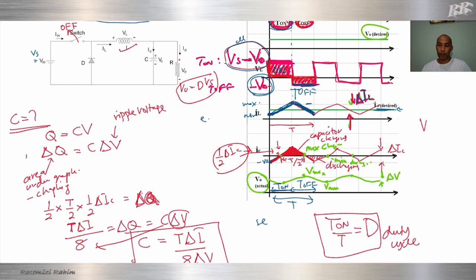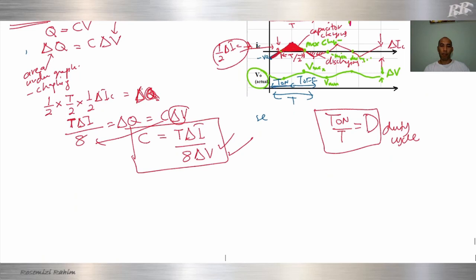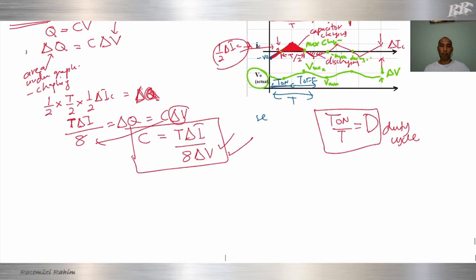That's all the equations for the Buck Converter — the inductor equation and the capacitor equation. That's all for the Buck Converter, which steps down the voltage. Thank you, bye.